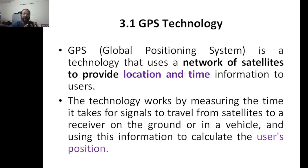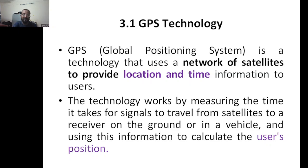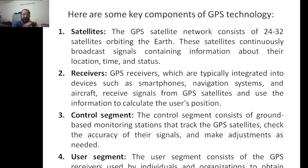Under this topic we have GPS technology and aircraft. GPS — the Global Positioning System — is a technology that uses a network of satellites to provide location and time information to users. The technology works by measuring the time it takes for signals to travel from the satellite to the receiver, then using that information to calculate the user's position.